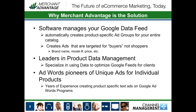Why Merchant Advantage is the solution: our software automatically manages your Google data feed. Whether you have 20 products or 4,000, the software will automatically create product-specific ad groups for your entire catalog. This gives you more control, better reporting, and will optimize everything for you.